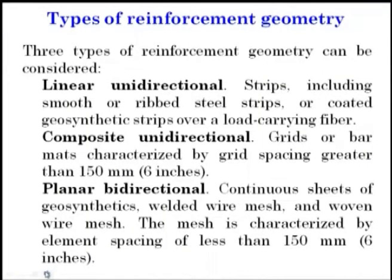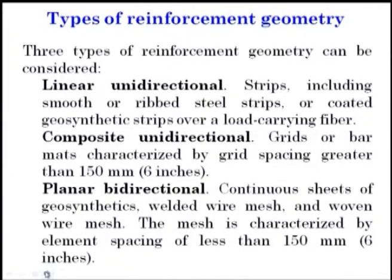Three types of reinforcement geometry can be considered. First, linear unidirectional — strips including smooth or ribbed steel strips or coated geosynthetic strips over a load-carrying fiber. Second, composite unidirectional — grids, bars, or mats characterized by grid spacing greater than 150 mm. Third, planar bi-directional — continuous sheets of geosynthetics, welded wire mesh, and woven wire mesh, characterized by element spacing less than 150 mm.